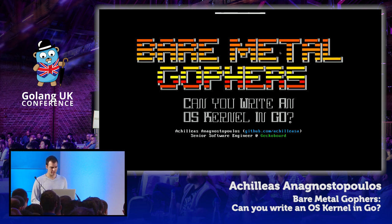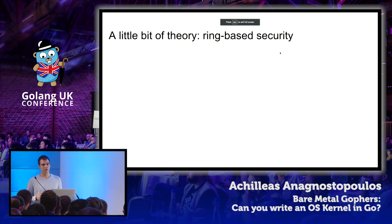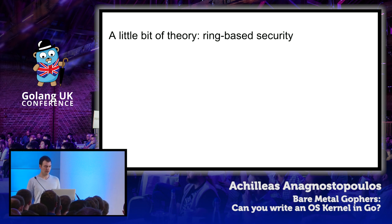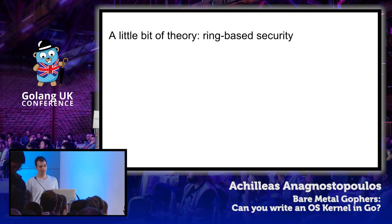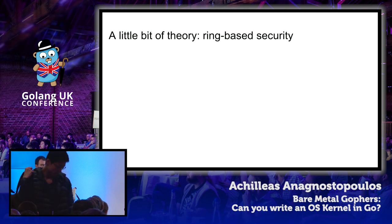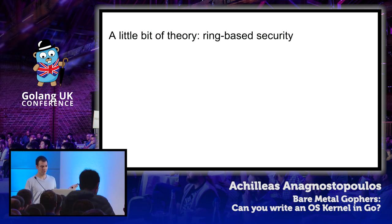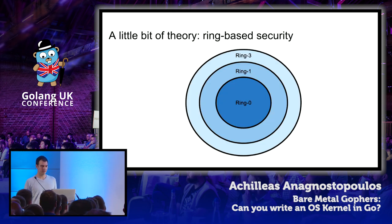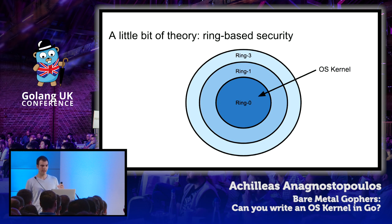Let's start with a bit of theory around the concept of ring-based security. The concept of rings refers to the privilege level under which a particular block of code is executing. Your typical textbook illustration is a series of concentric rings. The innermost ring is where your operating system kernel executes, and code running at ring zero has the highest possible privilege level, with unrestricted access to the CPU, memory, and any device attached to the system.